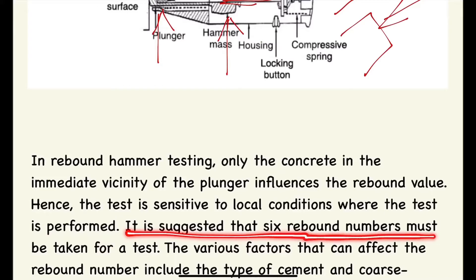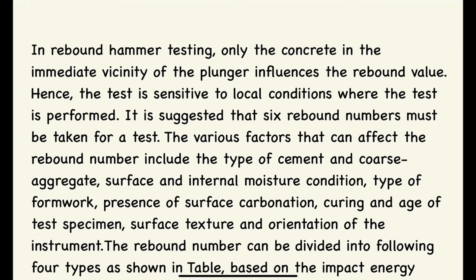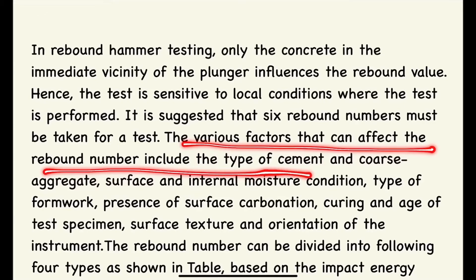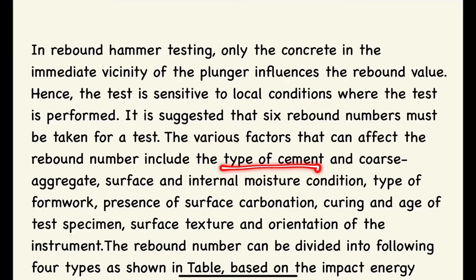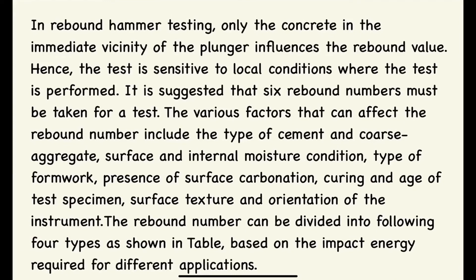It is suggested that six rebound numbers must be taken for a test. The various factors that can affect the rebound number include the type of cement (which depends upon C3A — tricalcium silicate), the type of formwork, presence of surface carbonation (which is ingress of carbon dioxide inside the hard concrete), curing, the age of the test, surface texture, and the orientation of the instrument.